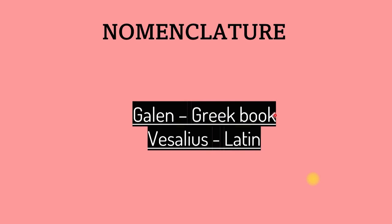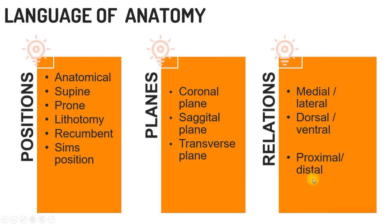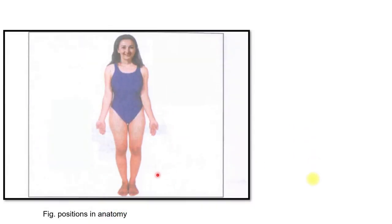Most medical words you will encounter are derived from Greek and Latin, as the pioneer anatomists Galen and Vesalius wrote books printed in those languages, and everyone followed their nomenclature. Under the language of anatomy, various planes, positions, movements, and terminologies are explained. Let's begin with positions. The anatomical position is the must-know position for a fresher.